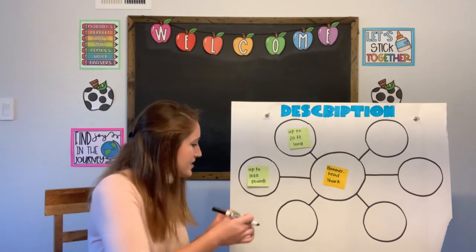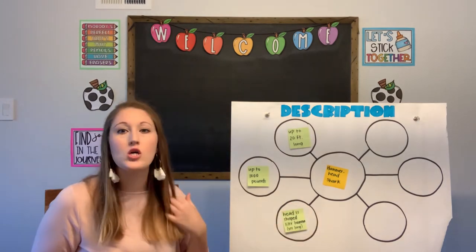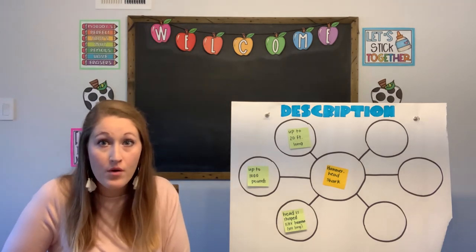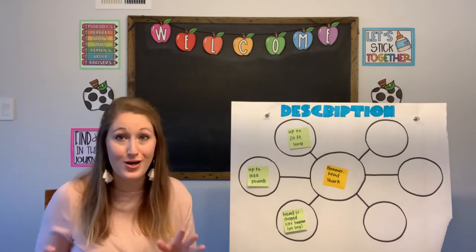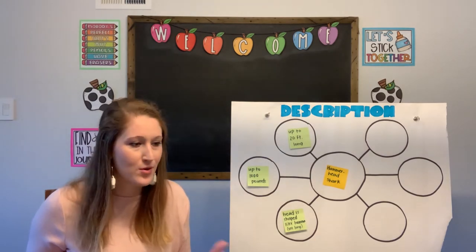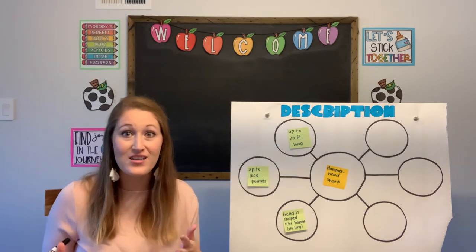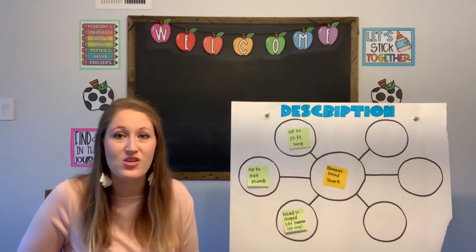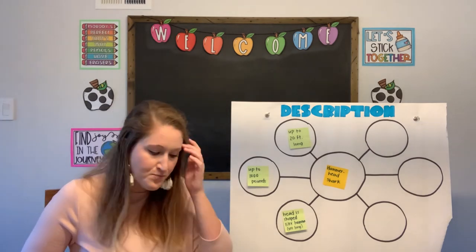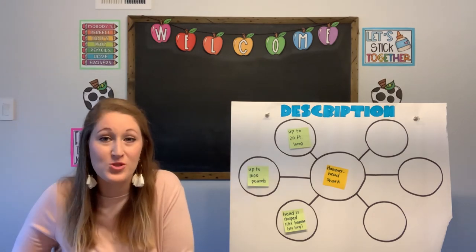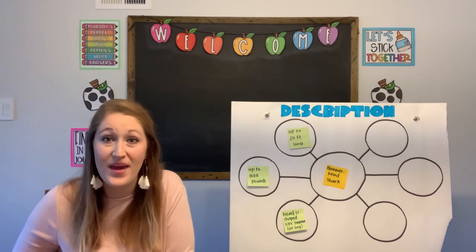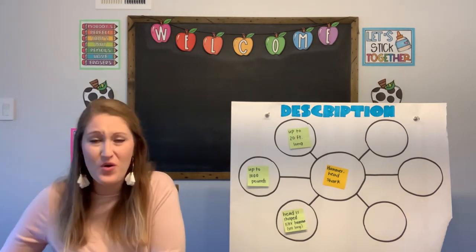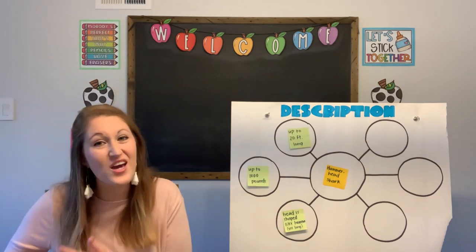Let's add what we learned to our description chart: up to 20 feet long, up to 1,000 pounds, head shaped like a hammer, and it can be up to three feet wide. It's really good to fill out these graphic organizers as you go while reading, because after we read the whole book there's so much information it's hard to keep it all straight. Filling out charts as you go helps you retain the information more clearly.